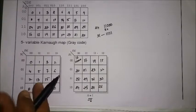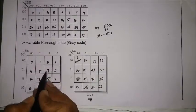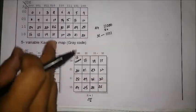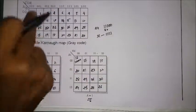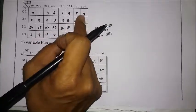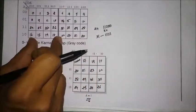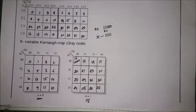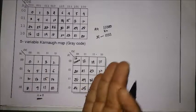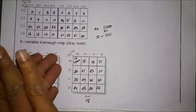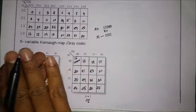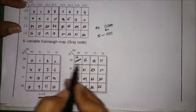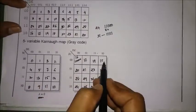Just as in the four-variable K-map where side-by-side cells are adjacent, the same applies here. These four cells are adjacent, and similarly these four cells are adjacent between the two four-variable K-maps. When we take one K-map on top of the other, we get adjacent cells such as 0 and 16, 1 and 17, 3 and 19, 2 and 18, and so on.